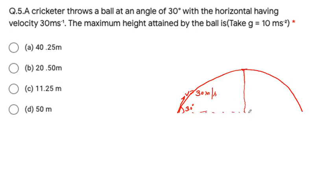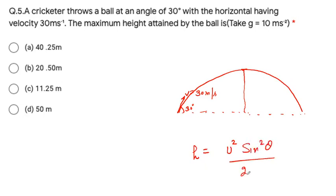The next question is: a cricketer throws a ball at an angle of 30 degrees with the horizontal velocity of 30 m/s. We have to find the maximum height attained by the ball. This is a projectile motion problem — the ball follows a parabolic path at 30 m/s at an angle of 30 degrees.